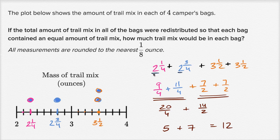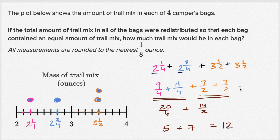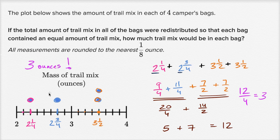That was just another way to do it. The simpler approach: two plus two is four, one fourth plus three fourths is another whole, so that's five. Three and a half plus three and a half: three plus three is six, half plus half is one, six plus one is seven. So in total you have twelve ounces. Now we want to redistribute it equally into four bags, so divide twelve by four. You get three ounces per bag. How much trail mix would be in each bag? Three ounces.